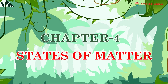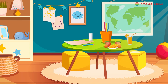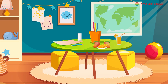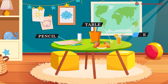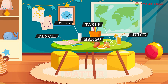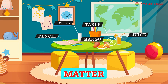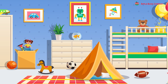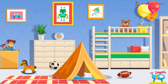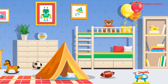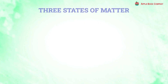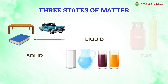Chapter 4: States of Matter. We see a number of things around us — for example, table, pencil, juice, milk, mango, etc. All these are made of different substances but are called matter. We can also say that anything that exists around us is called matter. There are three states of matter: solid, liquid, and gas.